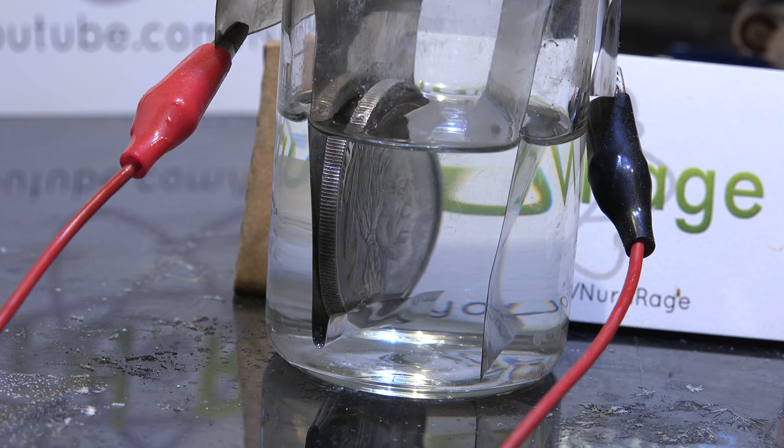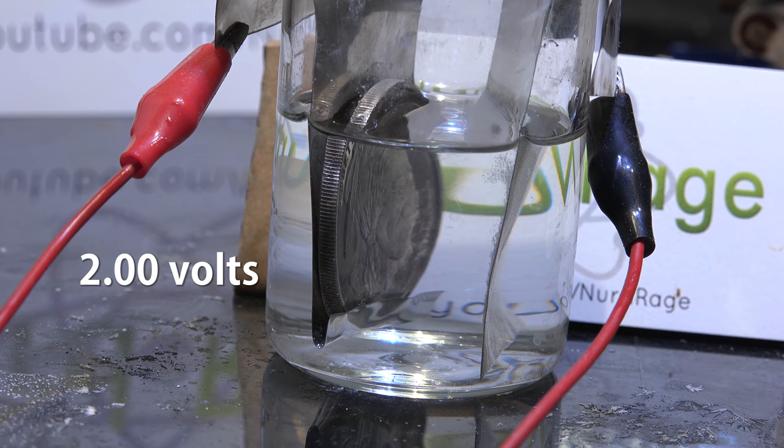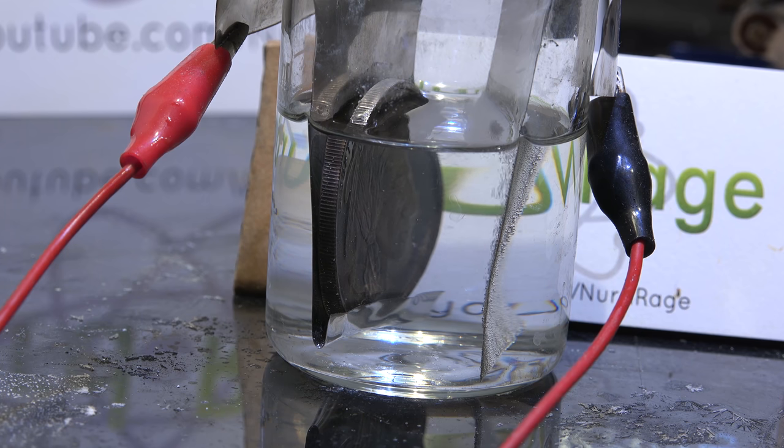I've also removed the filter paper separator and attached charging clips. Running without the separator is fine as long as I make sure the electrodes don't touch. The silver is connected to the positive lead of the power supply and the negative is connected to the other electrode. Now to charge it we apply two volts across the cell.